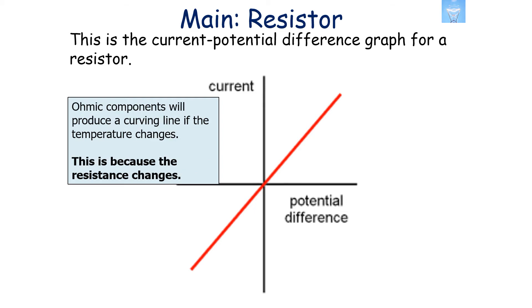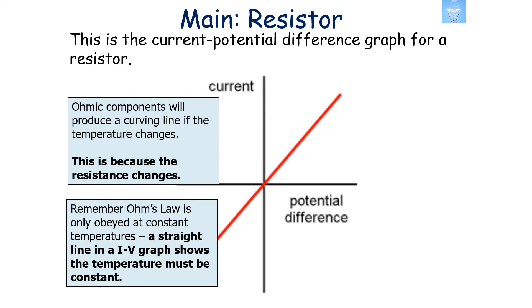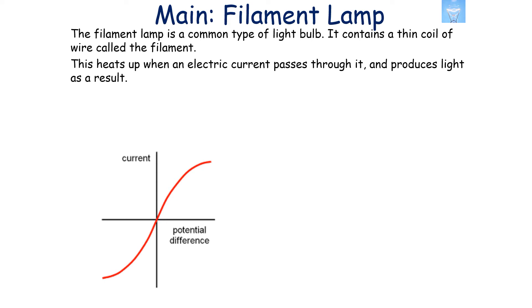Ohm's law is only obeyed at constant temperatures, so a straight line in an IV graph shows the temperature of the component must be remaining constant. The next component is the light bulb or filament bulb. This is a component that heats up when an electrical current passes through it and produces light as a result.